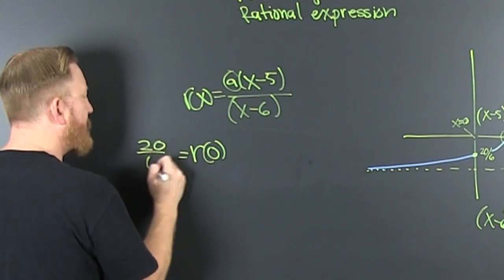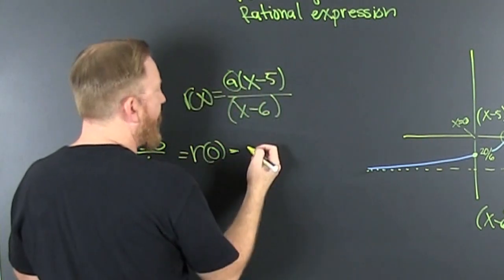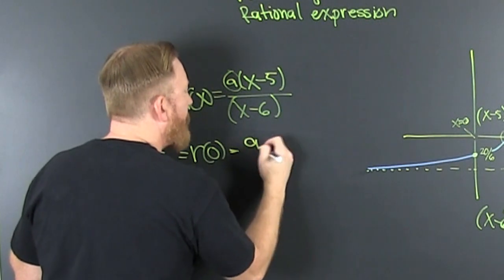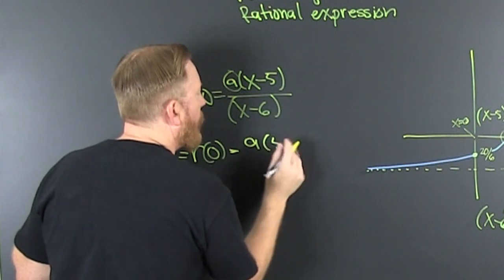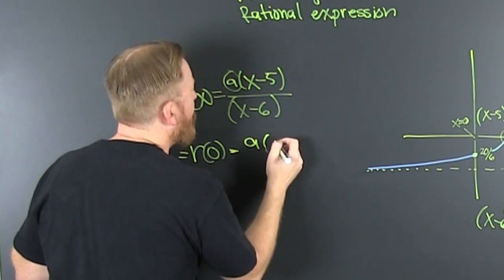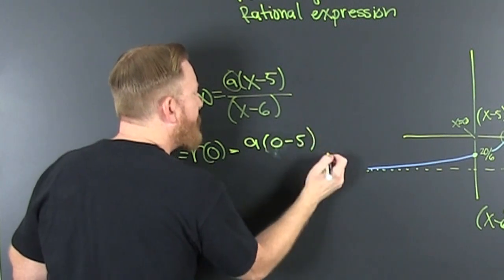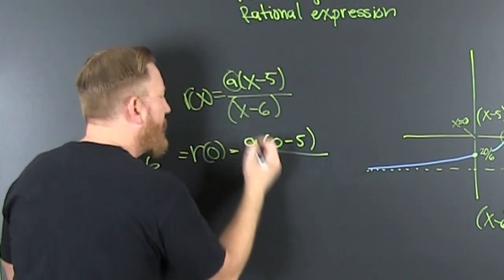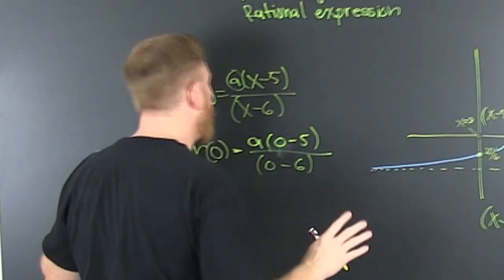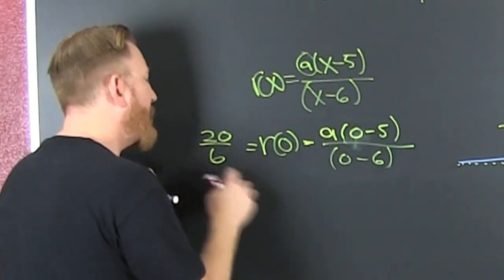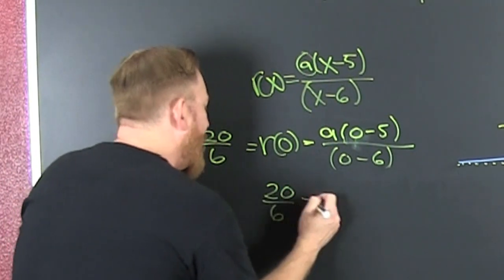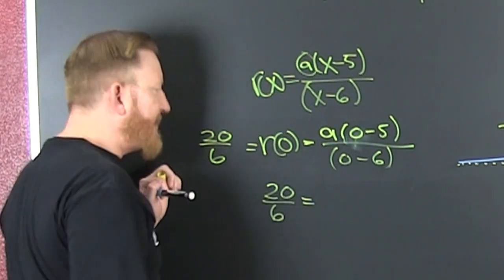That's 26 when all of these x's are 0. So I can find my A. That's 0 minus 5 divided by 0 minus 6. I'm being rigorous when I'm doing this. Isn't that 10 thirds? Yeah, sure.